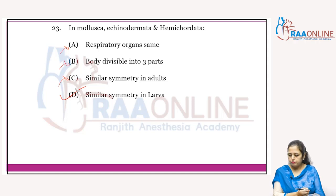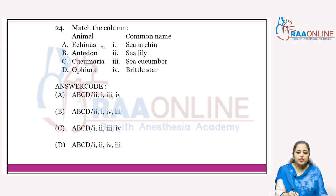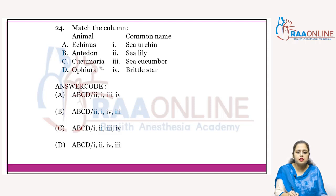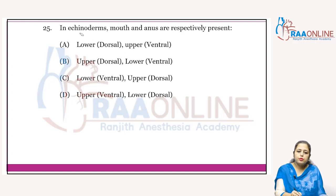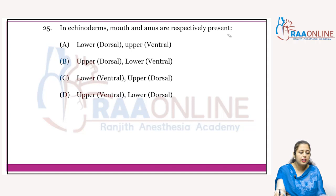Match the column: Echinus is the sea urchin. Antedon is the sea lily. Cucumaria is the sea cucumber. Ophiura is the brittle star. All matched correctly — answer is C.